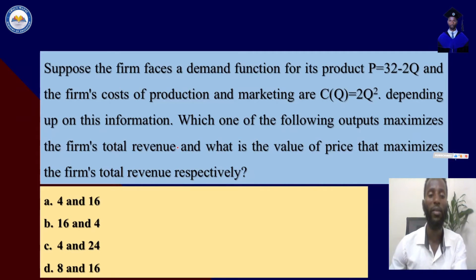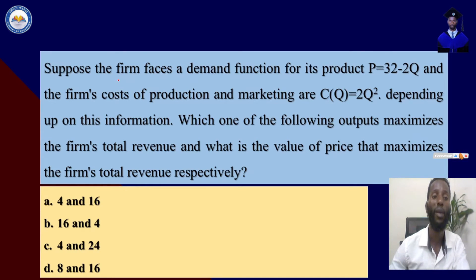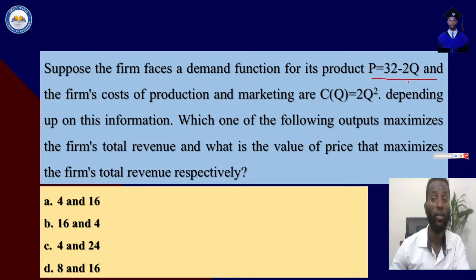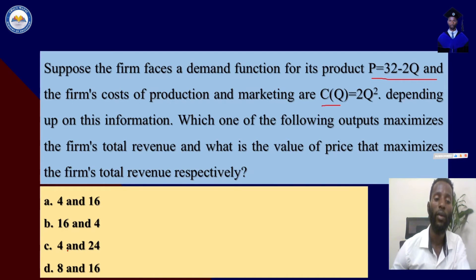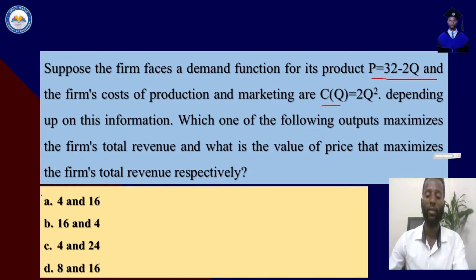Next, suppose that the firm faces a demand function for its product given by p which is 32 minus 2q, and the firm's cost of production and marketing is c(q) which is 2q squared. Which output level maximizes the firm's total revenue and what is the value of price that maximizes the firm's total revenue? A: 16 and 4, B: 4 and 24, C: 8 and 16, D: let's solve this question.